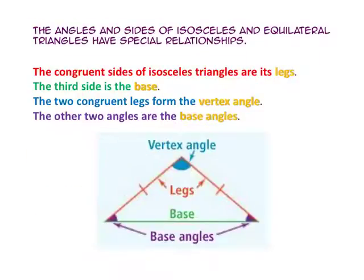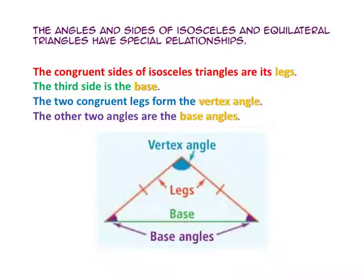The angles and sides of isosceles and equilateral triangles have special relationships. The congruent sides of an isosceles triangle are called its legs, and the third side is its base. Note that the triangle does not always sit on its base. The two congruent legs form the vertex angle, and the other two angles between the base and each leg are called the base angles.